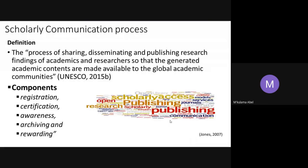By definition, scholarly communication is simply the process of disseminating and publishing research findings of academics and researchers so that the generated academic contents are made available to the global academic community and to everyone else who would be able to access the research findings. Traditionally, the scholarly communication process for findings to be considered authentic involves processes that are part of a four-to-five component framework: registration, certification, awareness, archiving, and rewarding.